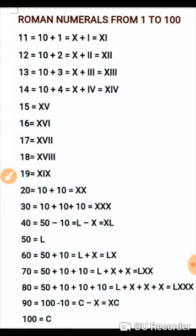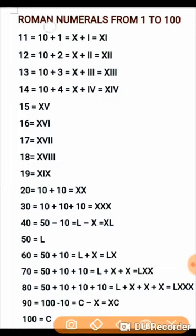Using these rules we can form Roman numerals from 1 to 100. For example, 11 is written as 10 plus 1, which is XI. 12 is written as 10 plus 2, which is XII. 13 is written as 10 plus 3, which is XIII. 14 is written as 10 plus 4, where 4 is IV, so 14 is written as XIV. Using these rules you can easily form 15, 16, 17, 18, and 19 as well.